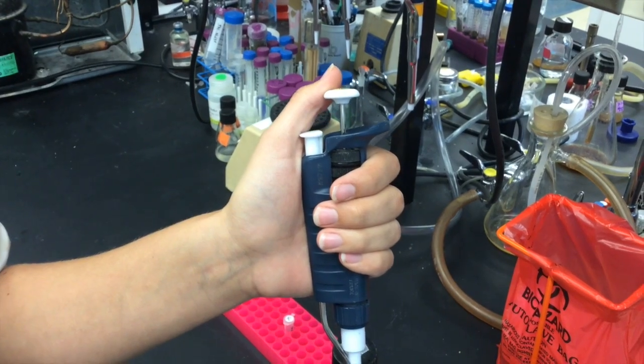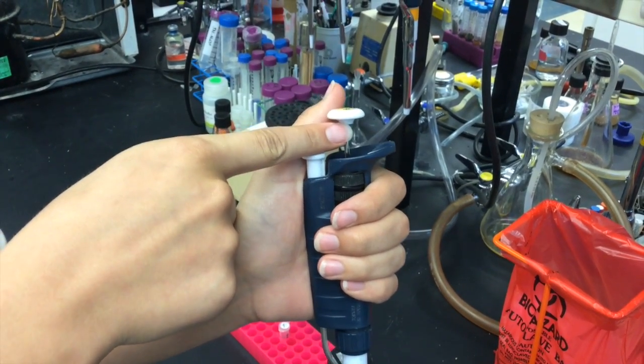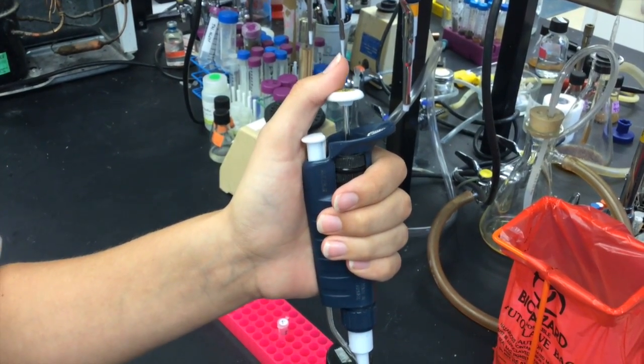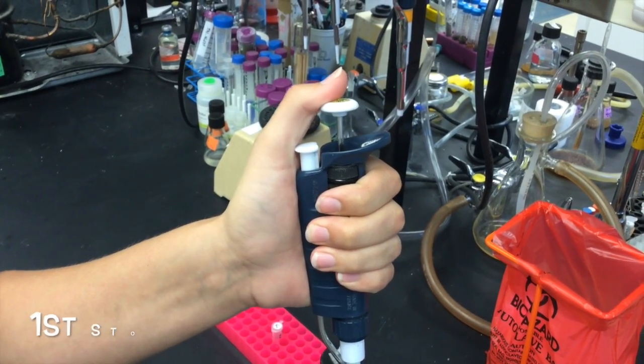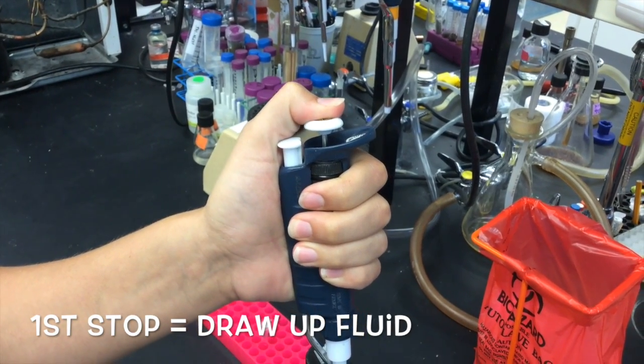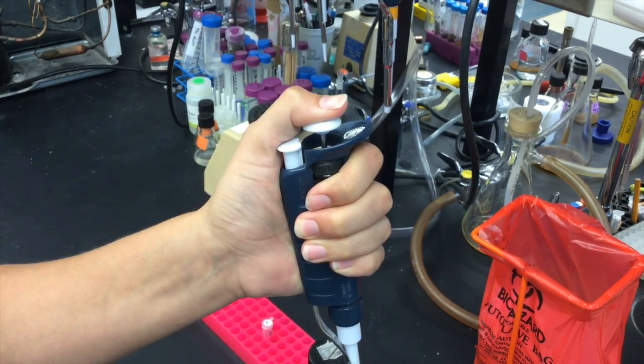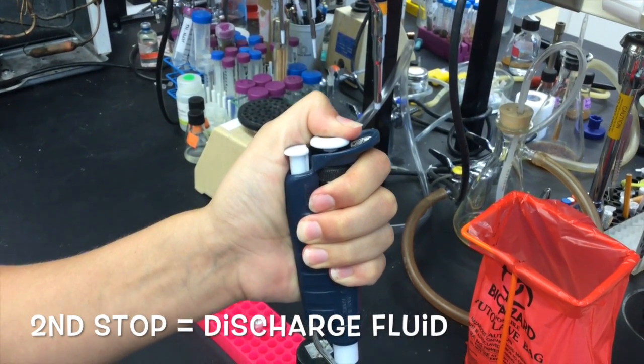On the pipetter, there is a main plunger. This plunger has two different positions when it is depressed. The first of these stopping points is used to expel air before drawing up liquid. The second is to discharge the liquid.